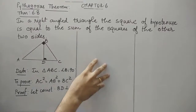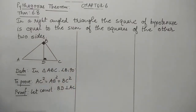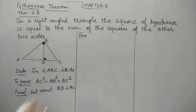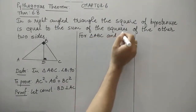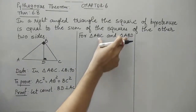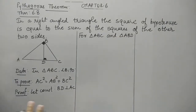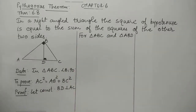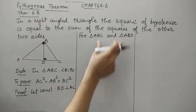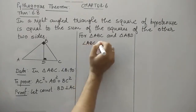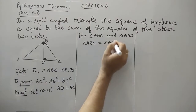Let's show the similarity. For similarity between main triangle ABC and triangle ABD: we can see that angle ABC equals angle ADB, as B is a right angle and D is also a right angle. So both angles are right angles.